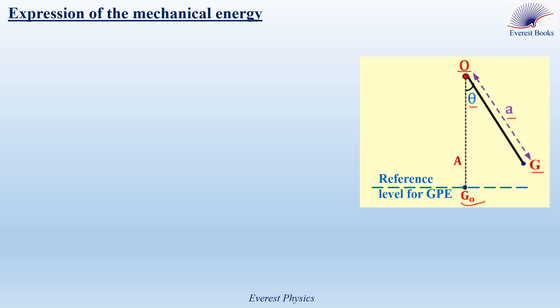Theta is the angular abscissa of the pendulum, or the angle between OG0 and OG. The expression of the mechanical energy is given by KE plus GPE. KE is equal to one-half I theta-prime squared, and GPE is equal to Mg times Z of G. I is the moment of inertia of the pendulum about the axis of rotation delta. Theta-prime is the angular speed of the pendulum. M is the mass of the pendulum. Z of G is the altitude of the center of mass relative to the reference level for gravitational potential energy.